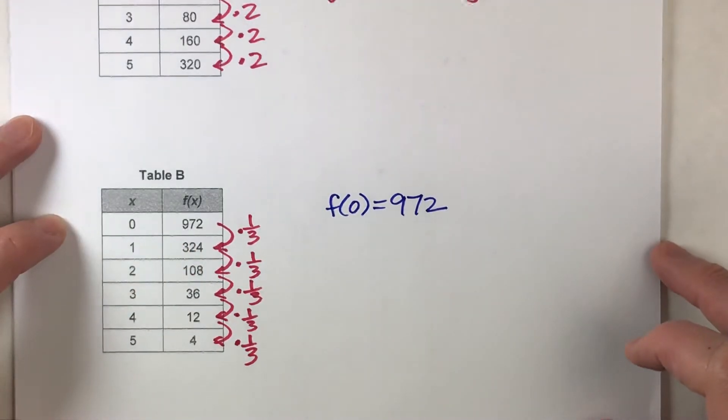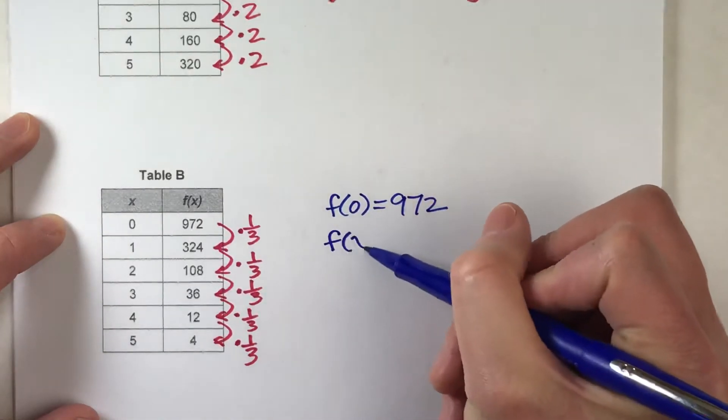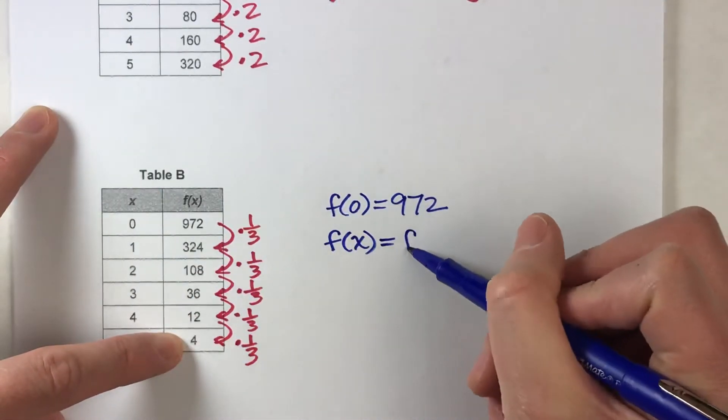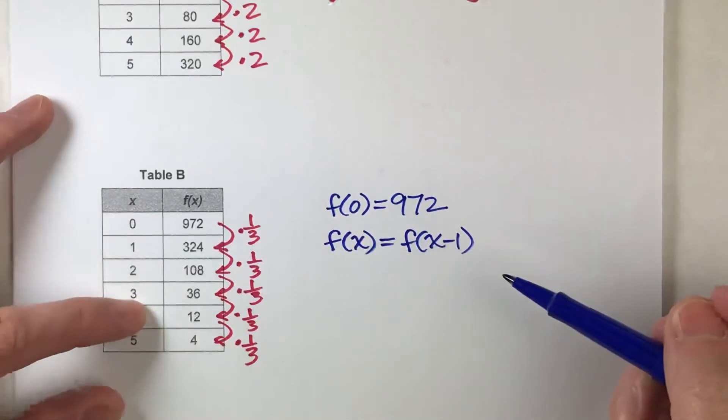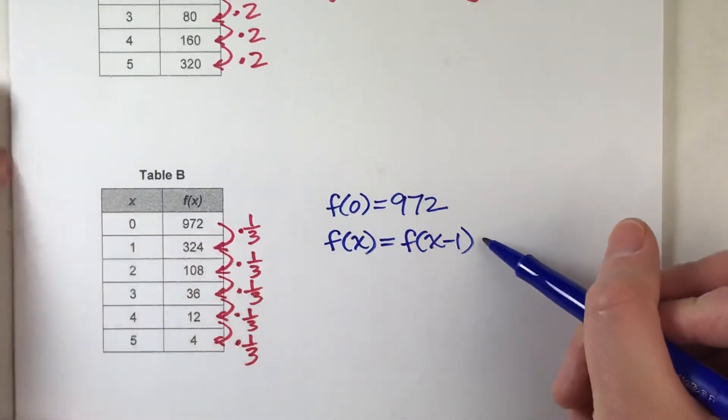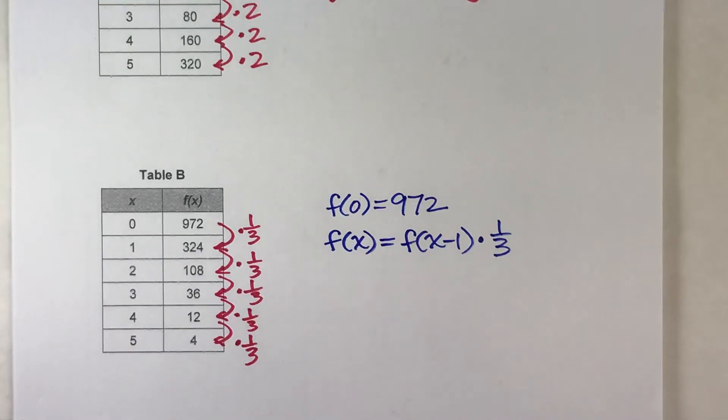All right, now, the second part of our recursive equation has to state our pattern. So, our pattern is to get any value of f of x, we start by taking our previous value, whichever one it may be, and we just multiply it by one-third. And that's our recursive equation right there.